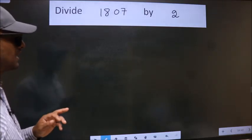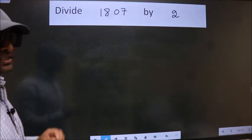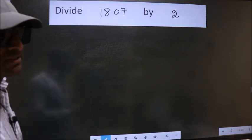Divide 1807 by 2. To do this division, we should frame it in this way.